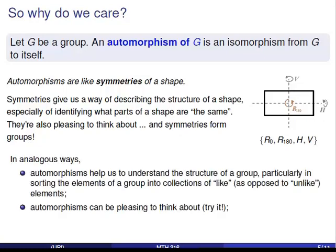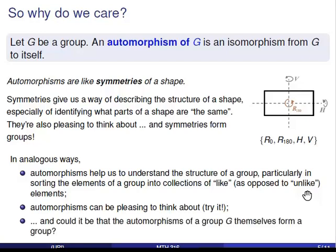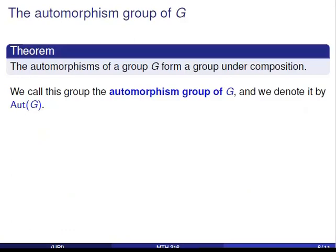Now back to automorphisms. In much the same way that symmetries help us to understand shapes, automorphisms help us to understand groups. As we look at which elements can be mapped to which, automorphisms can help us decide which elements are like others or not like others. And like symmetries, automorphisms can be pleasing — there are often nice patterns involved. It seems natural to ask whether these maps from a group to itself themselves form a group. The answer is yes: the set of all automorphisms of a group G is itself a group with the operation of function composition.